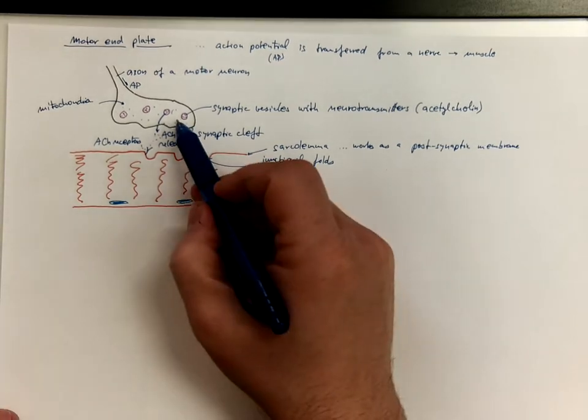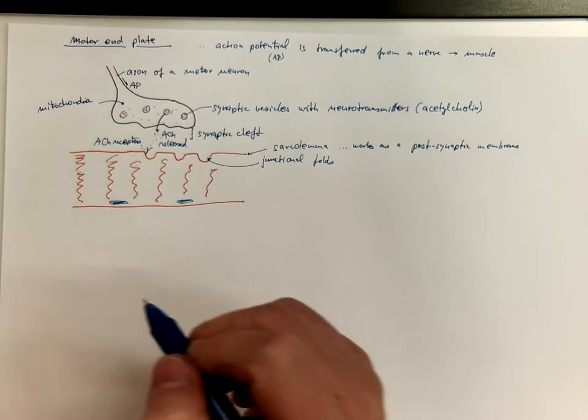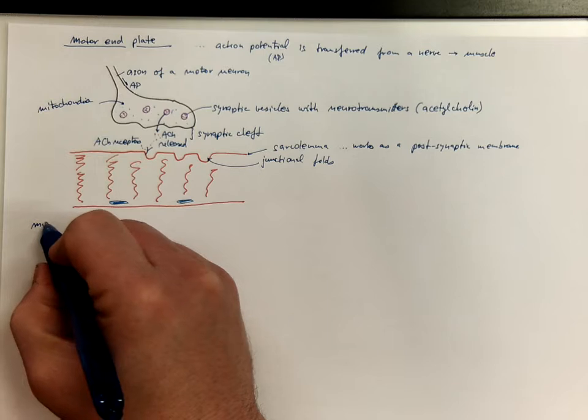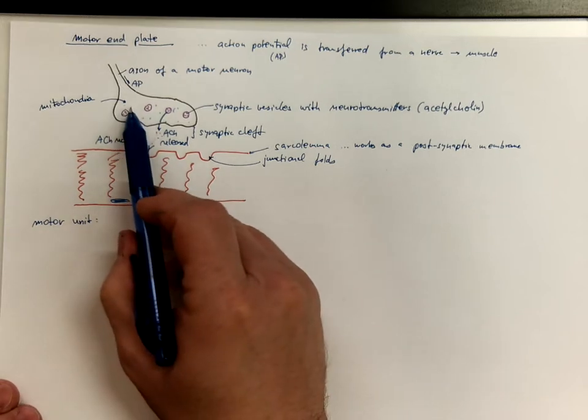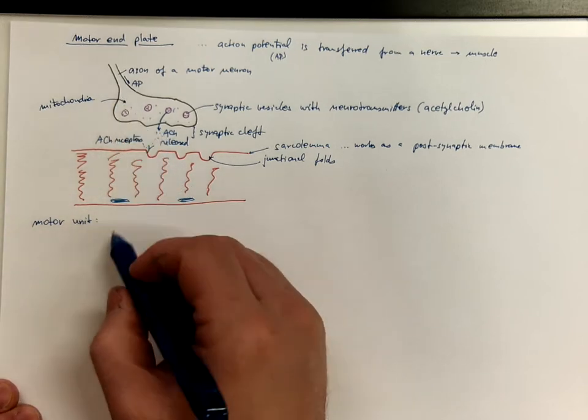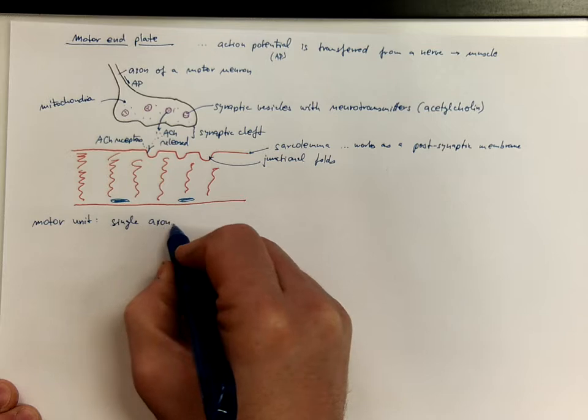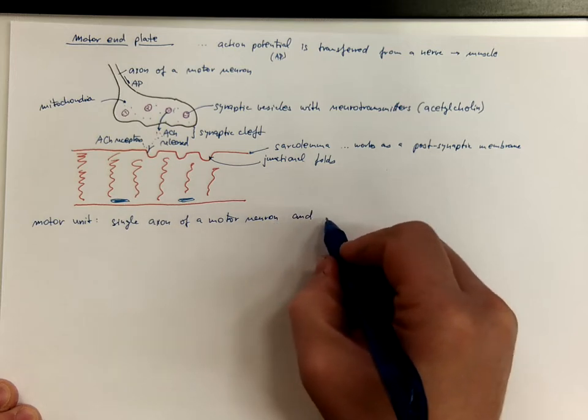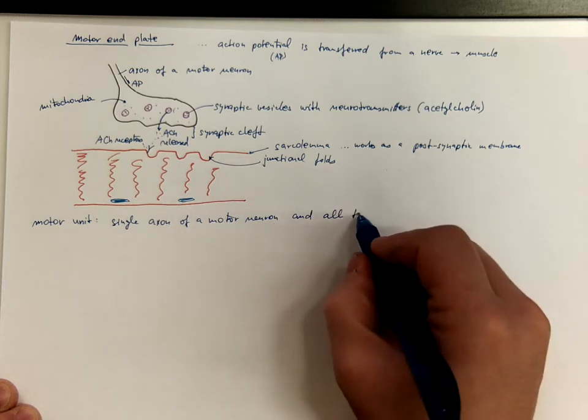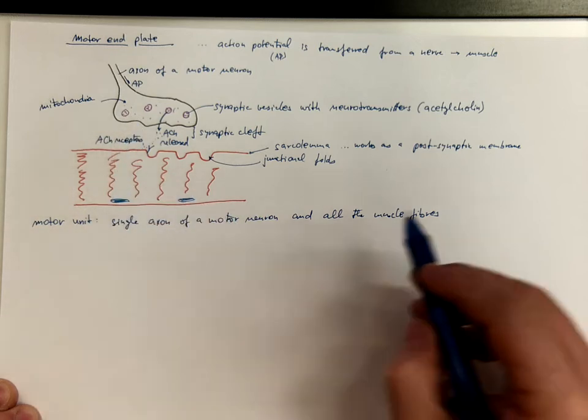Of course you might call this connection between the nerve fiber and muscle fiber a synapse. Let's discuss an important term. It is a motor unit. A motor unit in the human body is the one axon of a motor neuron and all the muscle fibers that are innervated by that particular axon.